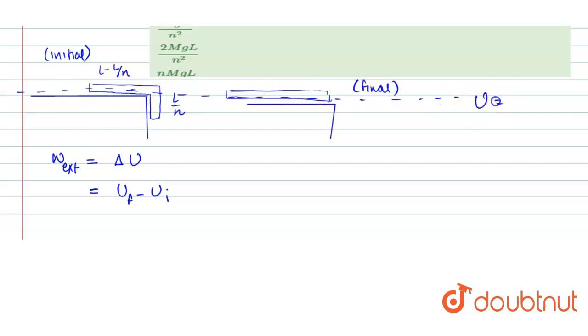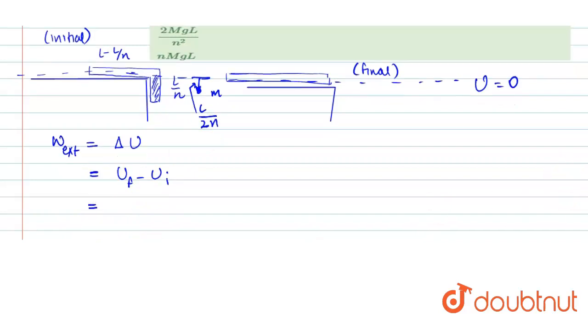So here the potential energy will be zero, right? Now let's say the hanging part of the chain has the mass small m. So we can replace this part with its center of mass. So here is the mass m, and this is at the height L by n, so it would be at L by 2n, right? So this length is L by 2n.